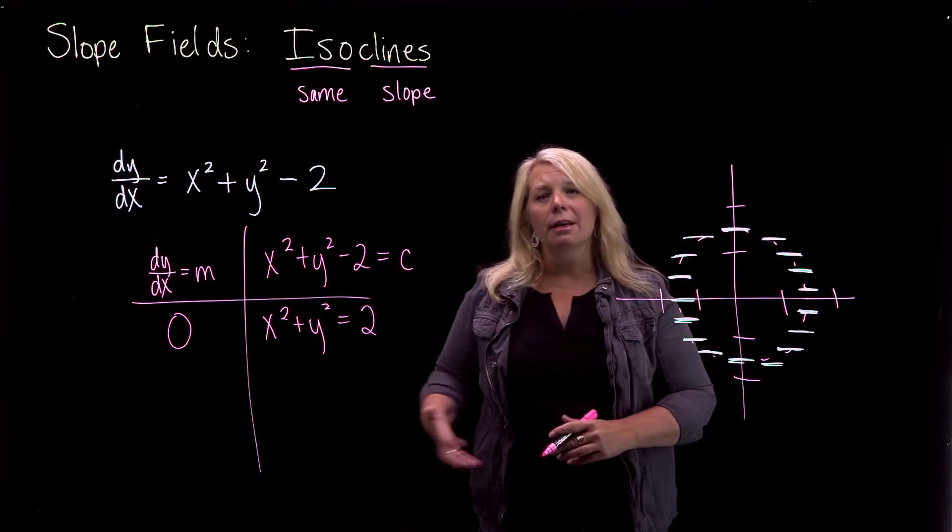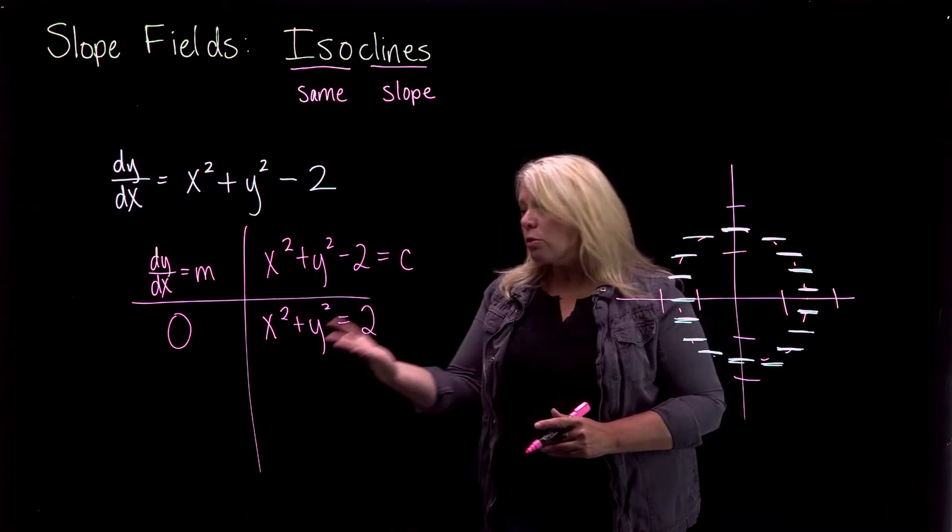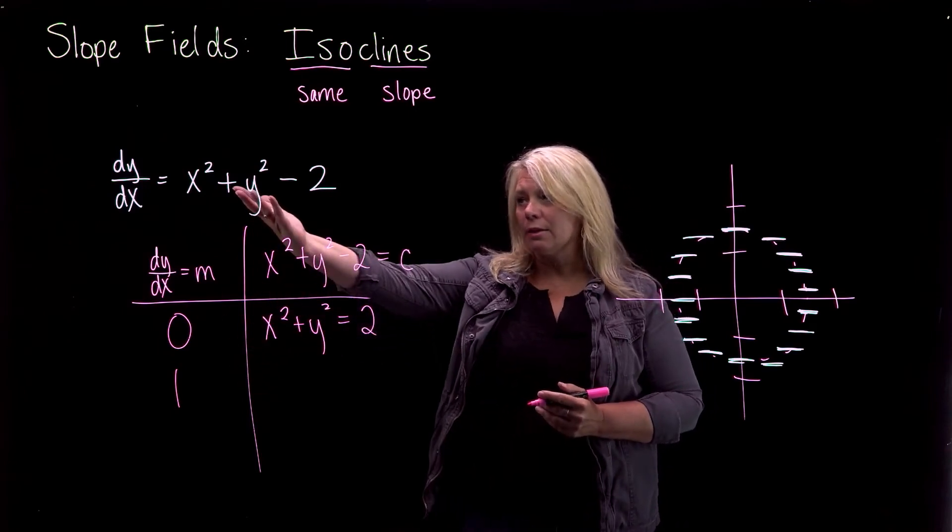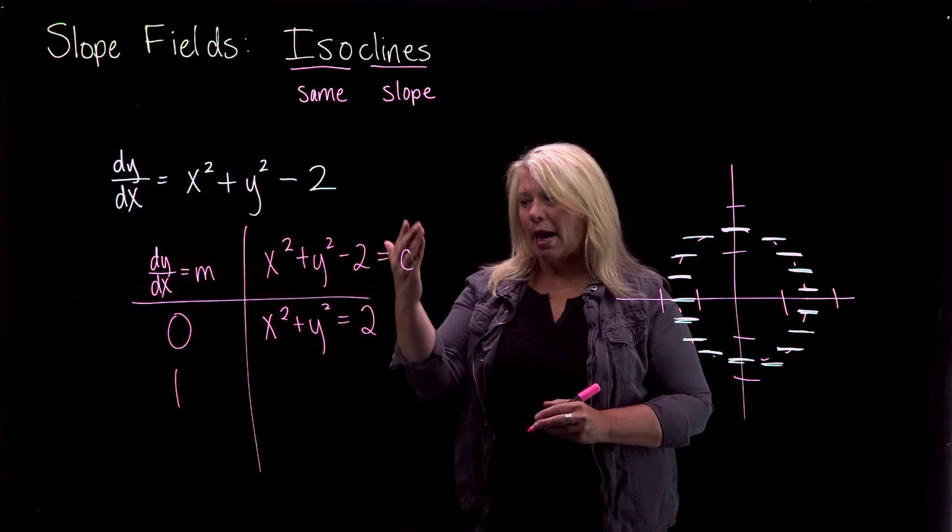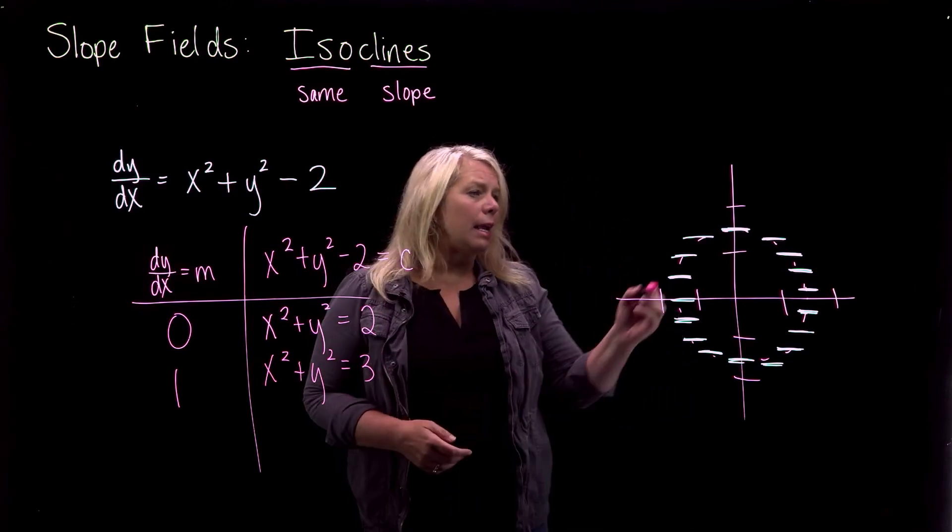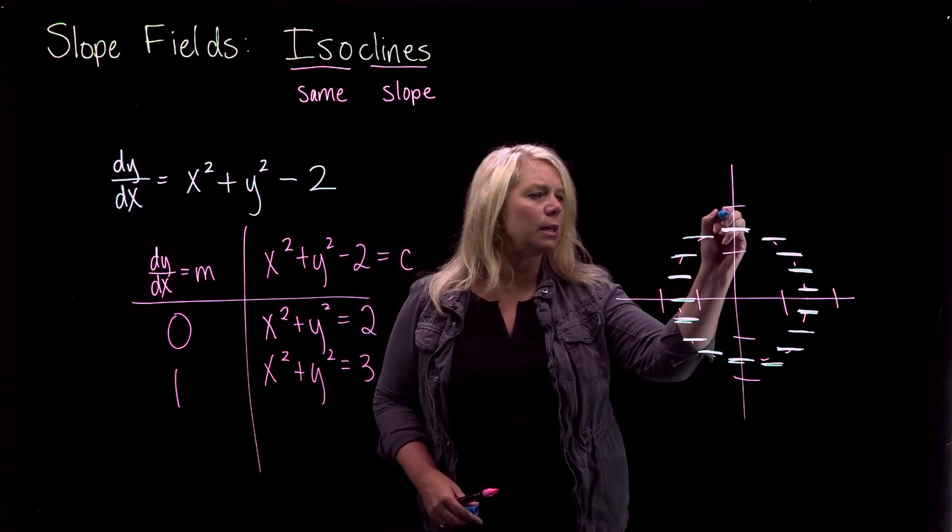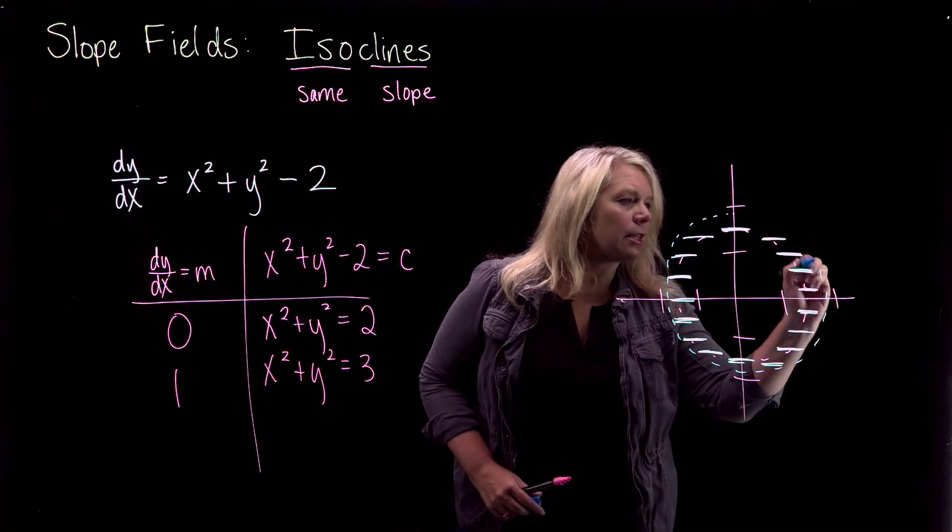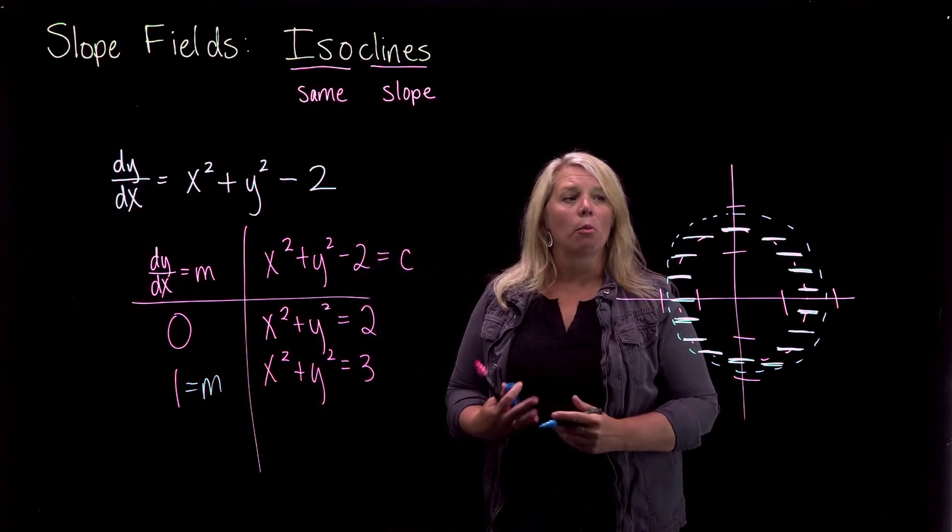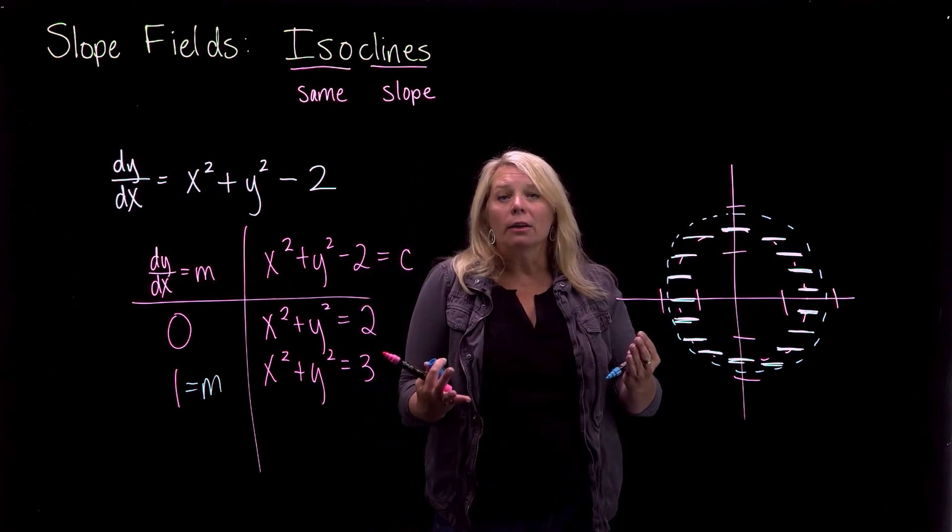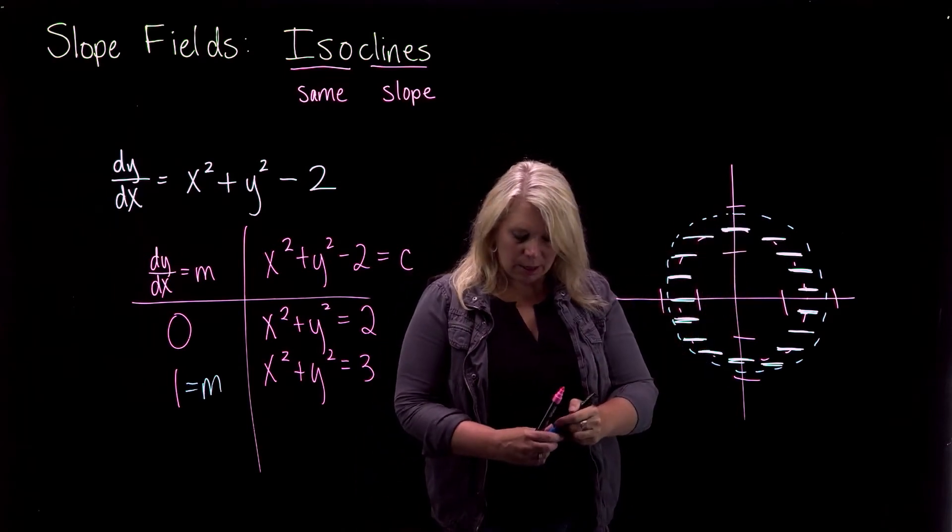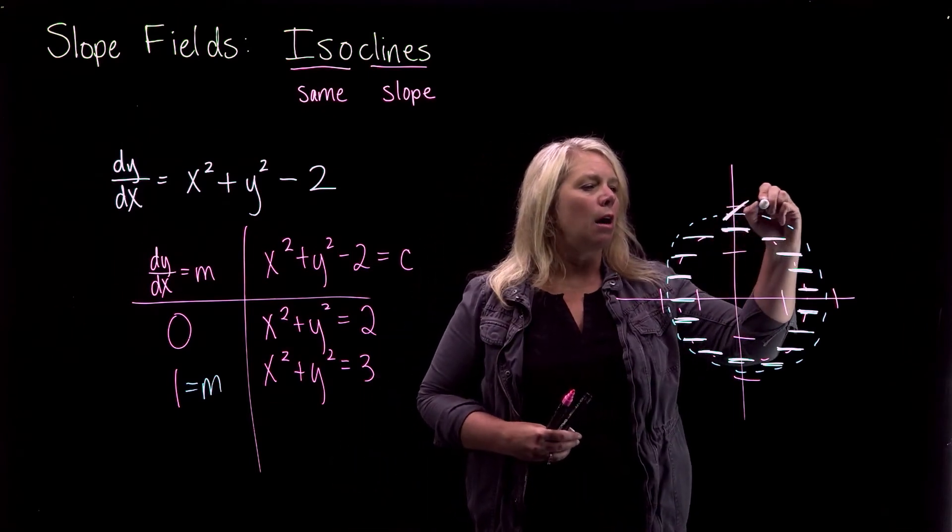We can also think about where the slope is positive or negative. You can think about that in a more global sense or you can just choose a positive number and choose a negative number. So just a nice convenient positive number, one. When I set x² + y² - 2 = 1, x² + y² = 3. That's going to be a circle of radius √3, just a little bit bigger than the circle I just drew there. But the point here is not the circle, but that along that circle I've got slope one. My tangent lines are going to have slope one. It should be pretty easy for you to visualize what slope one looks like. Rise and run are equal, or your tangent lines are going to form 45 degree angles with the coordinate axes.